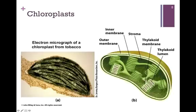Photosynthesis takes place in chloroplasts. An electron micrograph of a chloroplast from tobacco is pictured on the left. Note the green color due to the presence of a high concentration of chlorophyll pigments — we'll look at those more particularly in a moment. On the right is a schematic diagram showing the internal structure of a chloroplast. Let's look at that in greater detail.